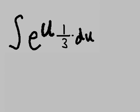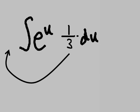Now I have the integral of e to the u 1 third times du. And this is just rewriting. We haven't taken the integral yet. Let's move 1 third over to the front, in front of the integral.